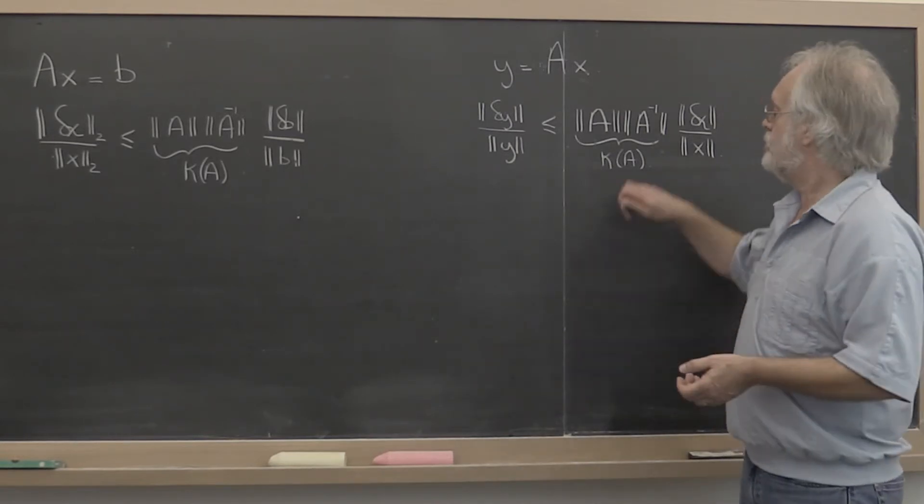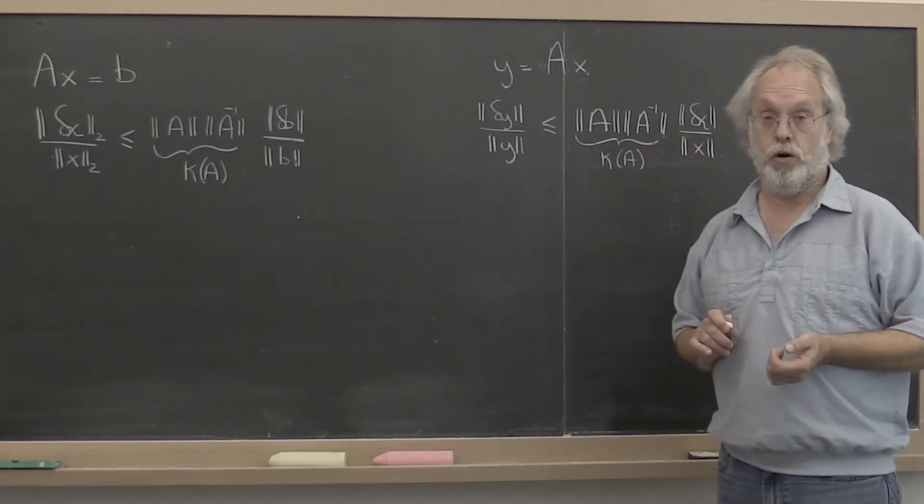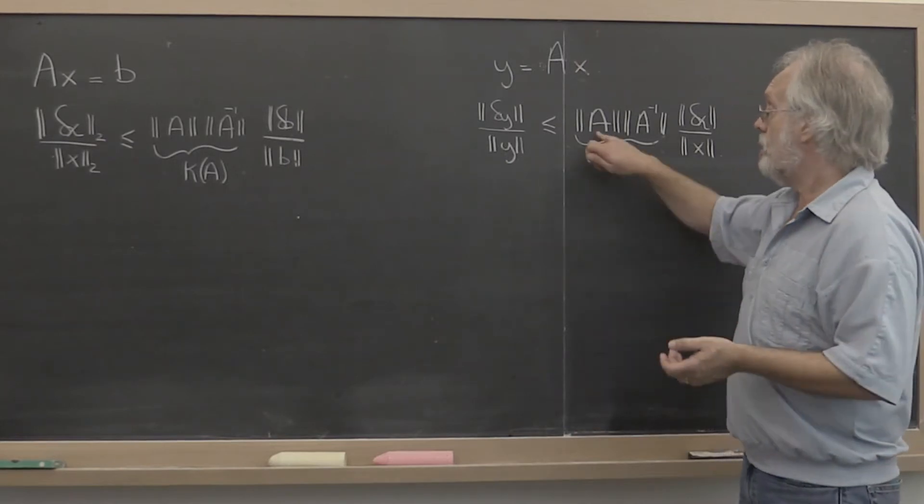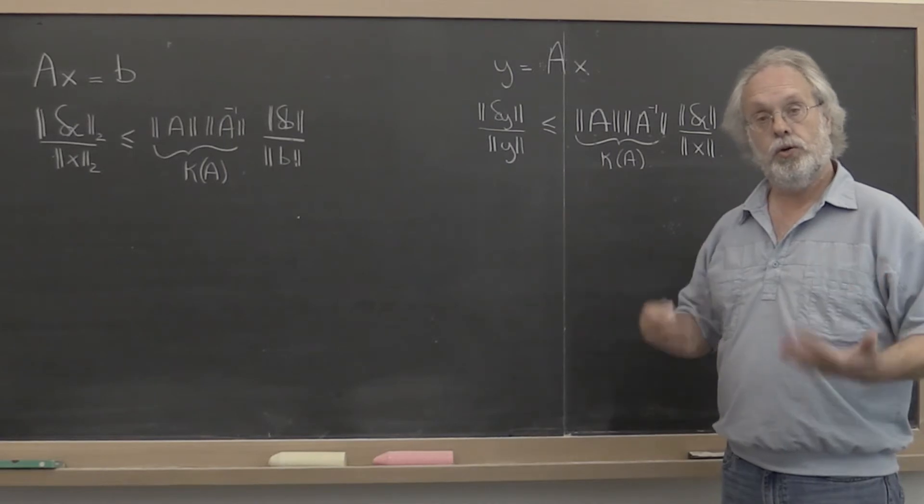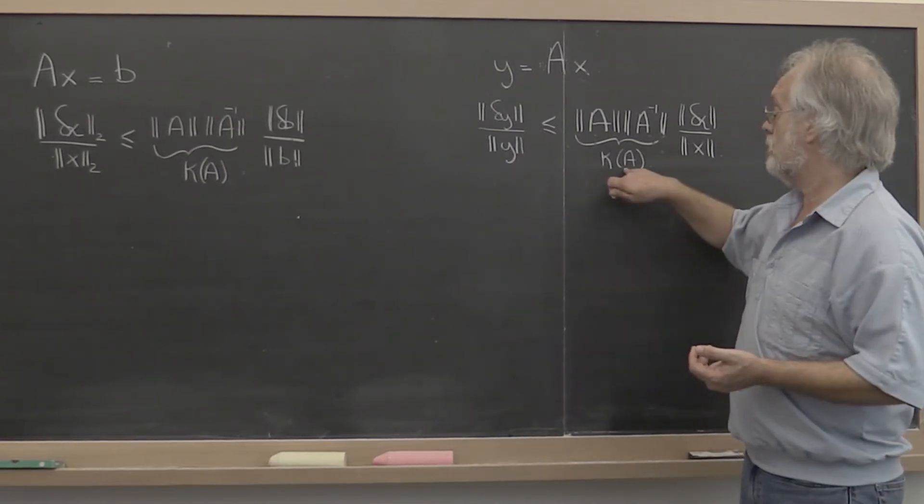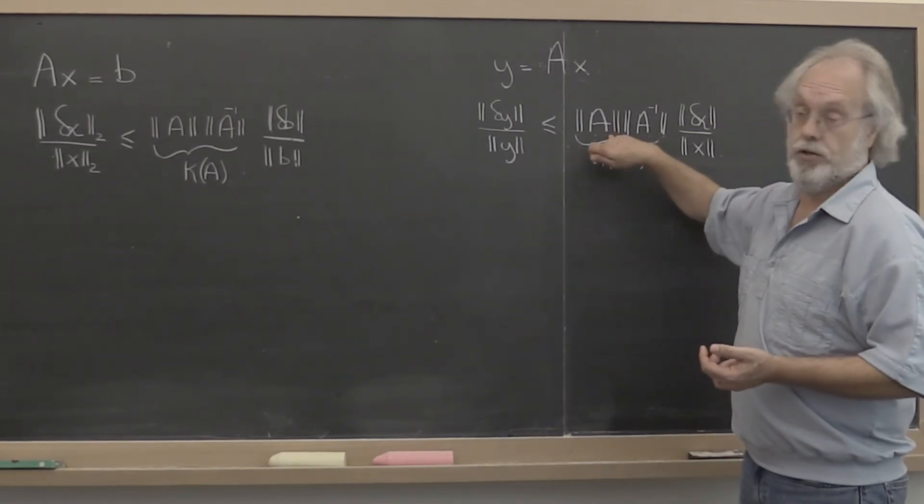It turns out that if you choose your norm to be the 2-norm and you only employ unitary matrices, unitary matrices have a condition number equal to 1 when you use the 2-norm.